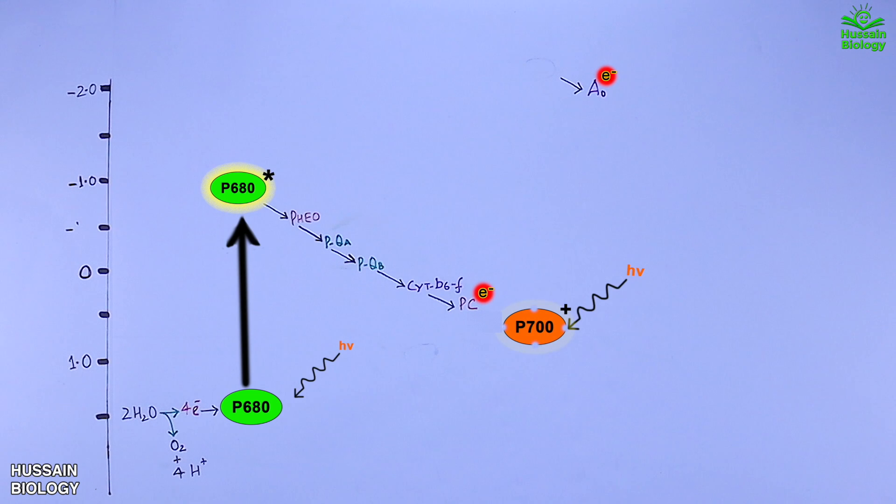Now to compensate for the lost electron, we have the plastocyanin on the left with electrons at lower reduction potential. So here the oxidized P700 at higher reduction potential grabs the electron from plastocyanin and gets reduced. And then again the cycle continues when the photons hit the P700 molecule.